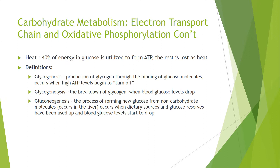Glycogenesis is the production of glycogen through the binding of glucose molecules, which occurs when high ATP levels begin to turn off glycolysis. Glycogenolysis is the breakdown of glycogen when blood glucose levels drop. Gluconeogenesis is the process of forming new glucose from non-carbohydrate molecules, which occurs when dietary sources and glucose reserves have been used up and blood glucose levels start to drop.